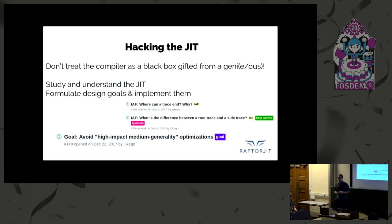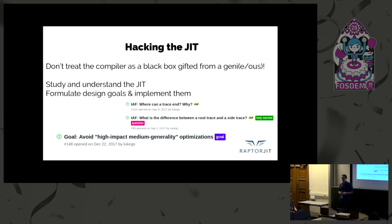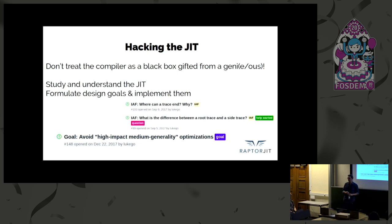With Reptijit, instead of treating the compiler like a special sauce you throw into your Lua programs to make them magically faster, we want to foster a culture of understanding the JIT compiler. With that understanding, we want to formulate design goals and implement them — making the JIT compiler easier to understand and easier to leverage. We want to avoid high-impact medium-generality optimizations: if you make a small change to your program and get a big change in performance, that's the problem. It's high-impact because you get a big hit if you fall off that optimized path, and that's why we want to avoid unreliable compiler behavior where small changes to your program cause big changes to performance.